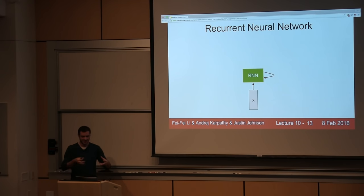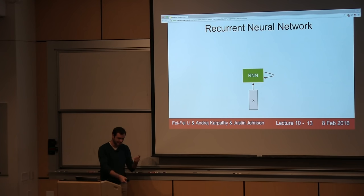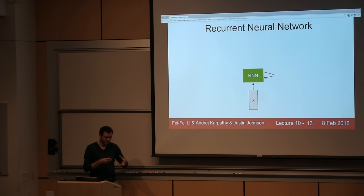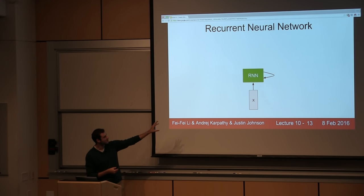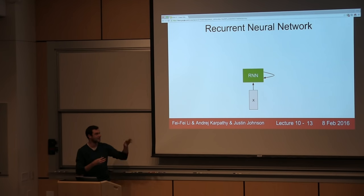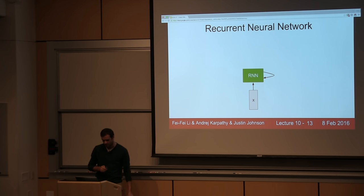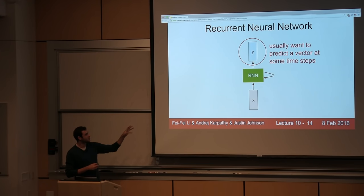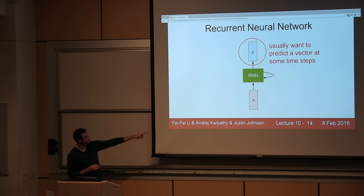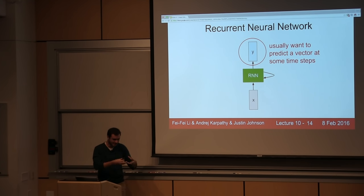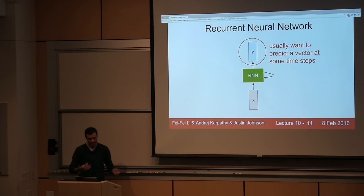A recurrent neural network is basically a box in green that has a state, and through time it receives input vectors. At every single time step we can feed in an input vector into the RNN; it has some state internally and it can modify that state as a function of what it receives at every single time step. There will of course be weights inside the RNN, and when we tune those weights the RNN will have different behavior in terms of how its state evolves as it receives these inputs. We can also produce an output based on the RNN's state — we can produce these vectors on top of the RNN. The RNN is really just the block in the middle, where it has a state and can receive vectors over time, and then we can base some prediction on top of its state in some applications.